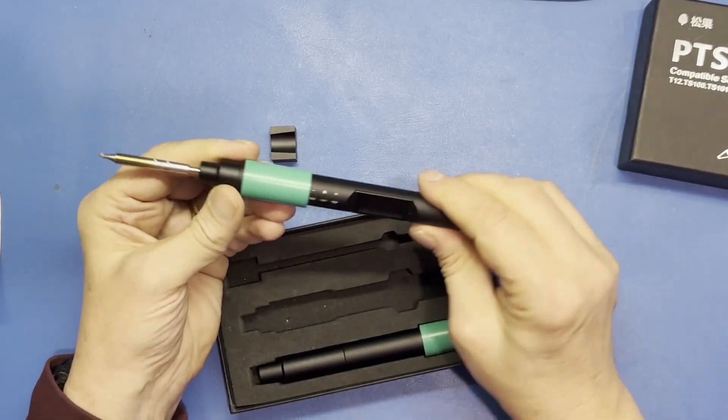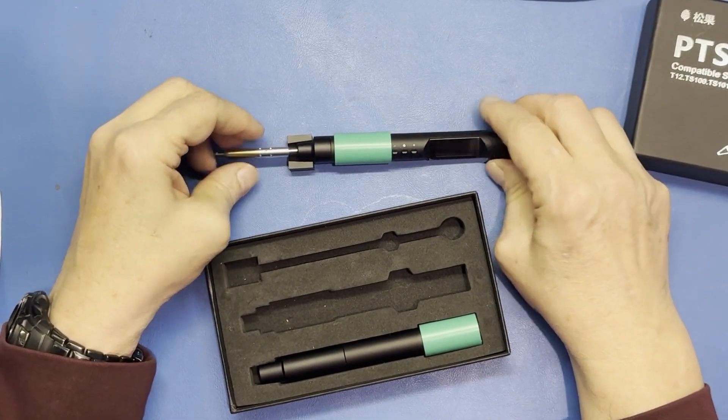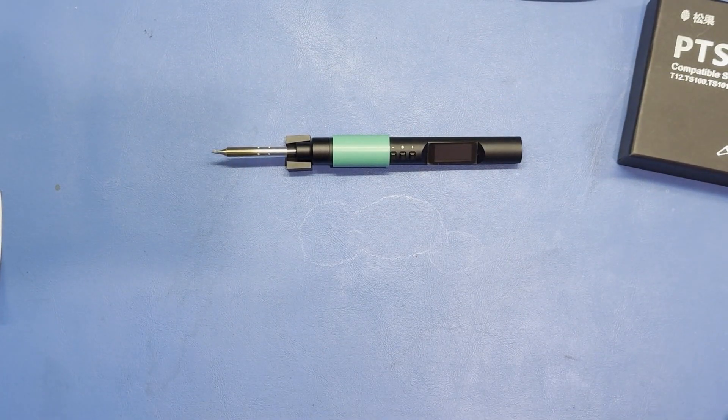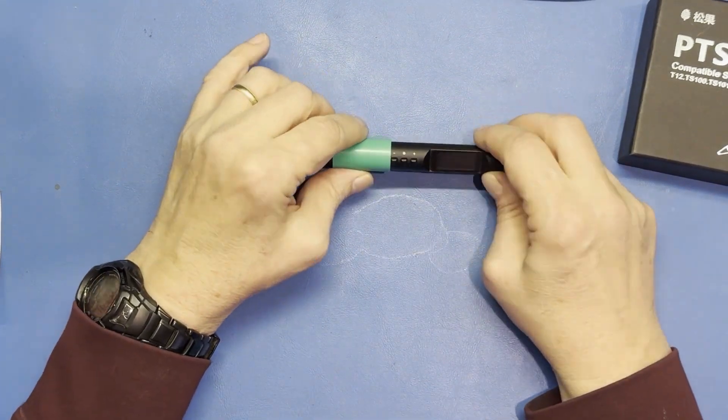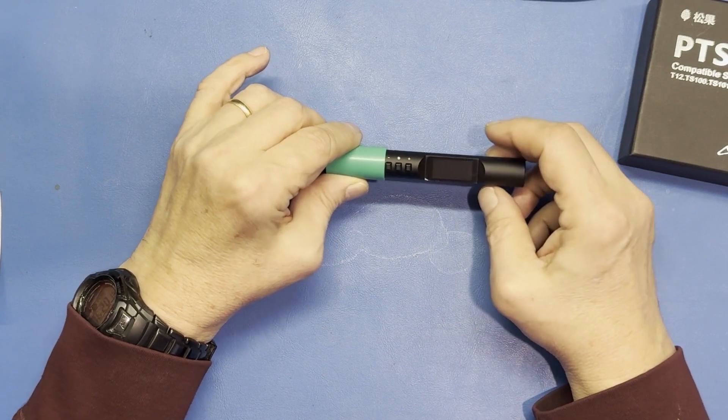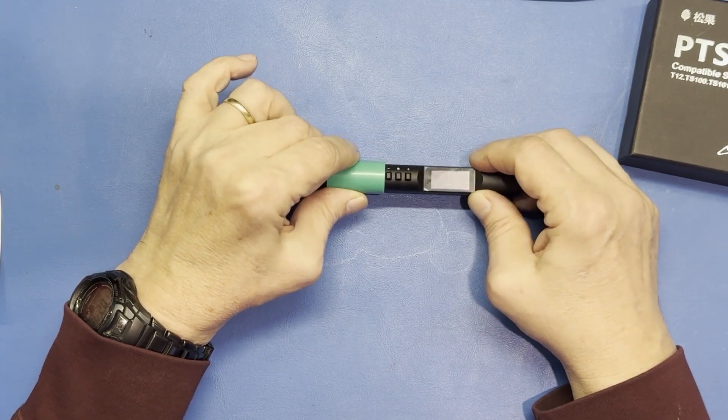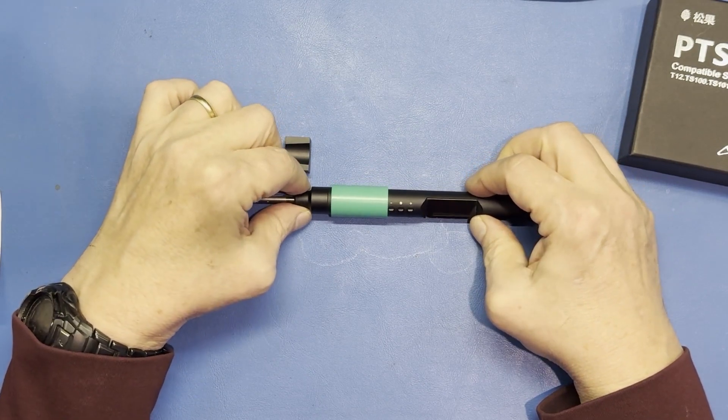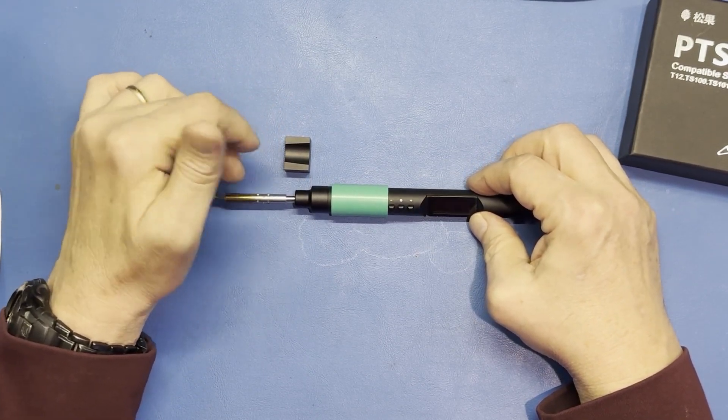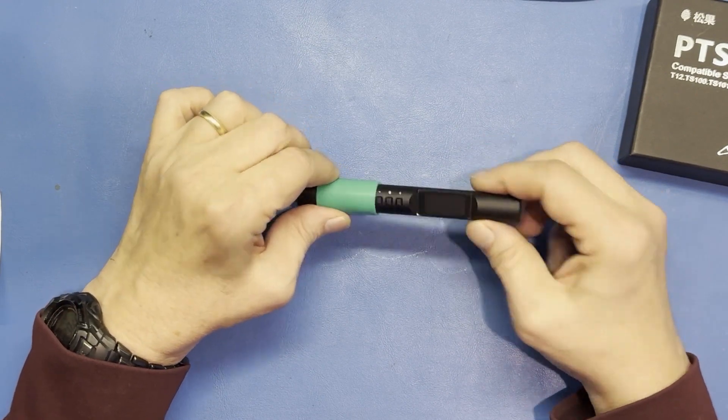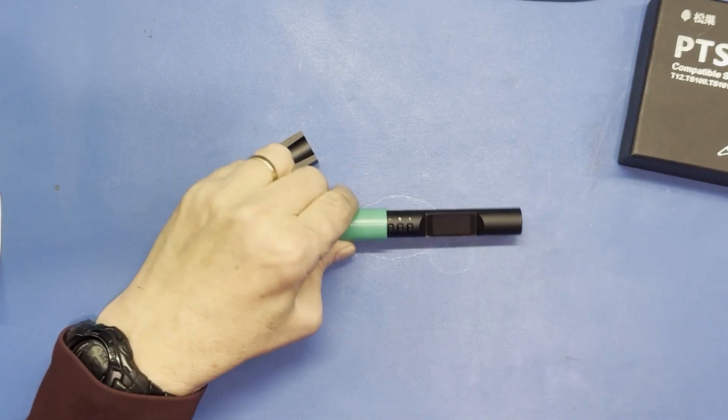And that is the iron. Now inside of this we have a 128 by 64 OLED display, a 32-bit processor, a thermocouple temperature monitoring circuit that uses the thermocouple that's in the tip, and it has a USB-C interface.